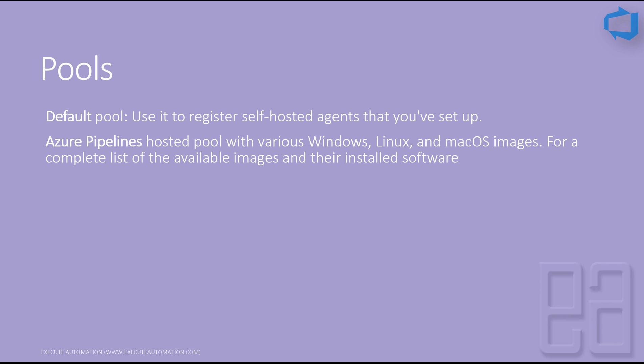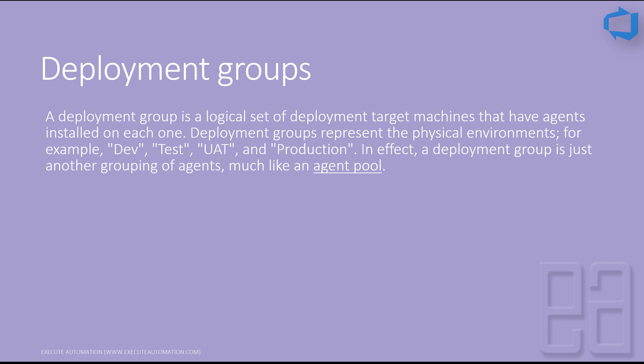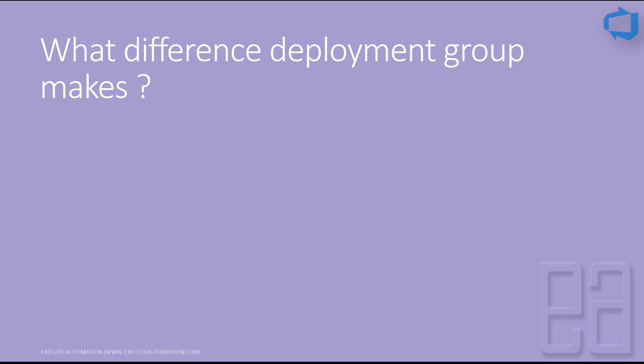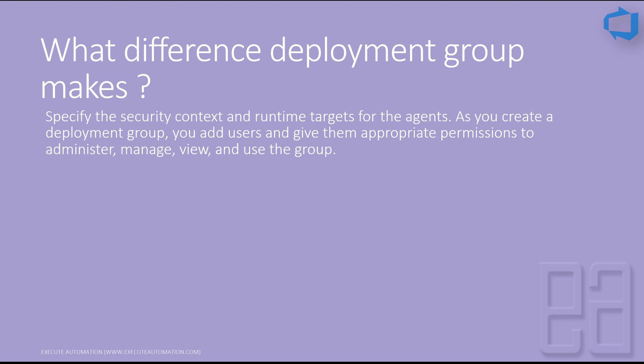There is also something called deployment groups, which we will discuss in detail when covering the release pipeline. A deployment group is a logical set of deployment target machines that each have an agent installed. It represents physical environments such as Dev, Test, UAT, and Production. It is similar to an agent pool but has important differences.